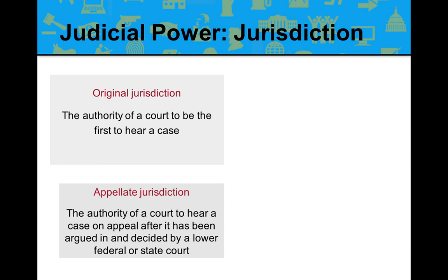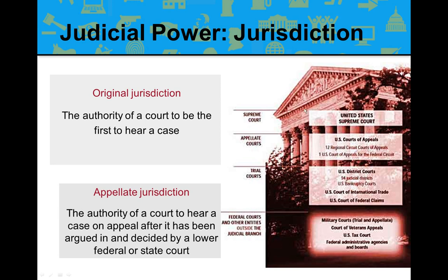Before any court can hear a case, it must be demonstrated that it has jurisdiction — the authority to hear and decide the issues. The federal court system is a tiered structure: the U.S. Supreme Court at the top has both original and appellate jurisdiction. The 12 regional appellate courts — Texas is in the fifth regional district — have only appellate jurisdiction; you cannot hold a first trial at the appellate court.